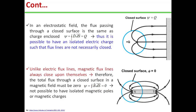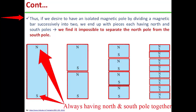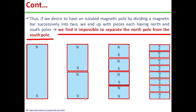Therefore, it is not possible to have isolated magnetic poles or magnetic charges. If we desire to have an isolated magnetic pole by dividing a magnetic bar successively into two, we end up with pieces each having north and south poles. Let's make two, four, eight, or many more pieces — each piece will have a north and south pole. Therefore, it is impossible to separate the north pole from the south pole, so an isolated magnetic pole never exists.